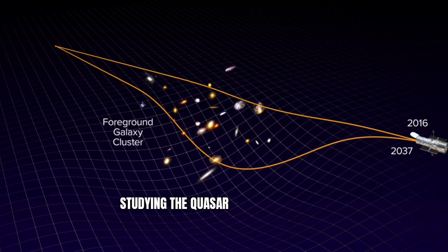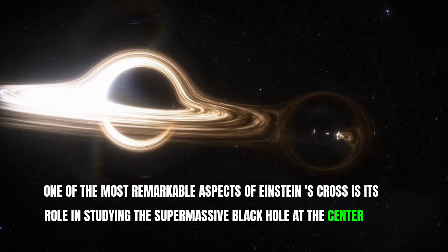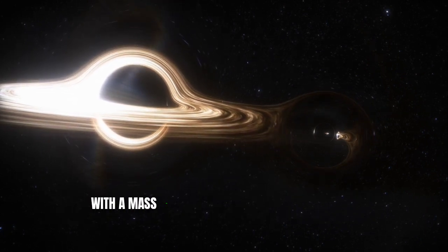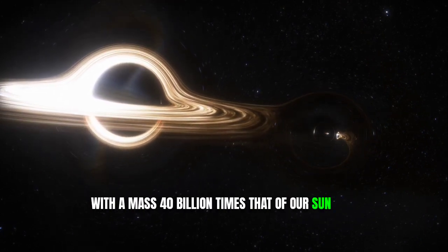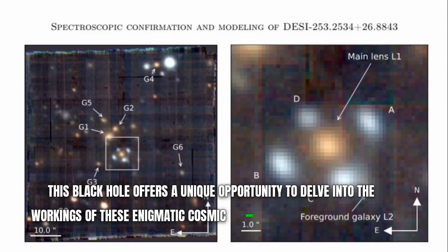Studying the quasar and black hole. One of the most remarkable aspects of Einstein's cross is its role in studying the supermassive black hole at the center of the quasar. With a mass 40 billion times that of our sun, this black hole offers a unique opportunity to delve into the workings of these enigmatic cosmic entities.